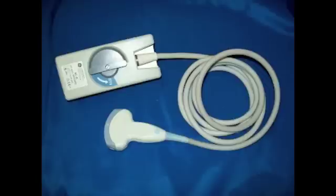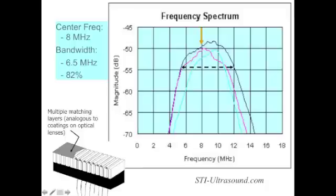This is a modern curvilinear transducer that can operate at not just one frequency, but a wide range from 1 to 5 MHz. This is possible because modern transducers have broad frequency bandwidths. The same factors that result in short duration pulses are involved in extending the transducer's operating frequency range.